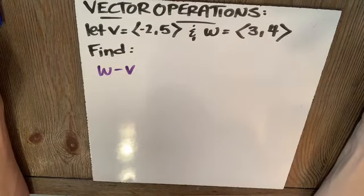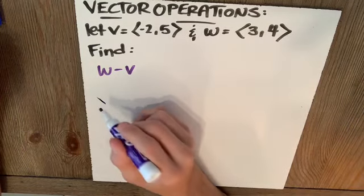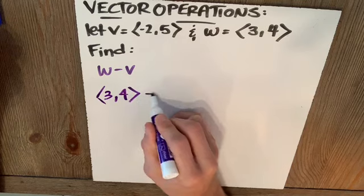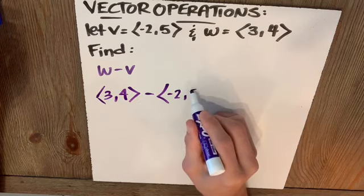Find W minus V. Well, the math is easy. That's 3, 4 for W minus V was negative 2, 5.